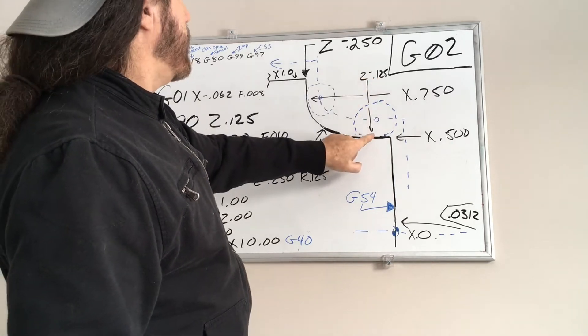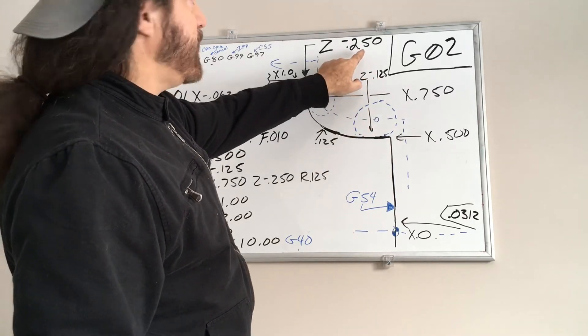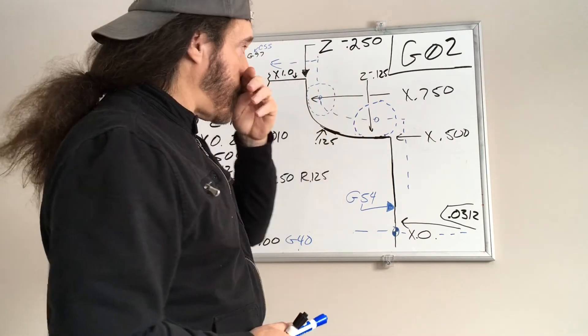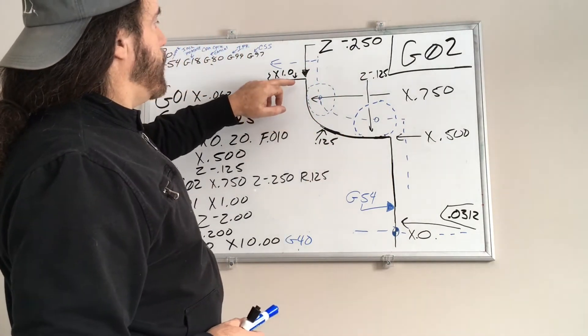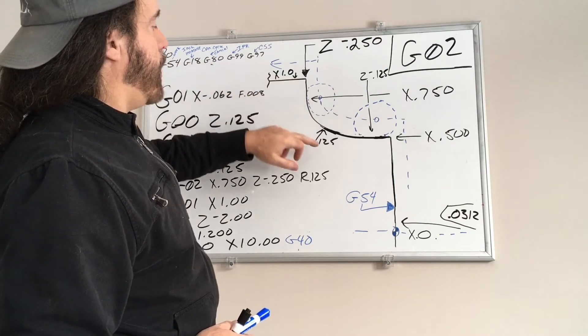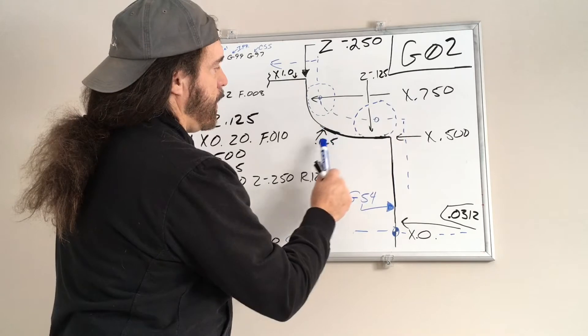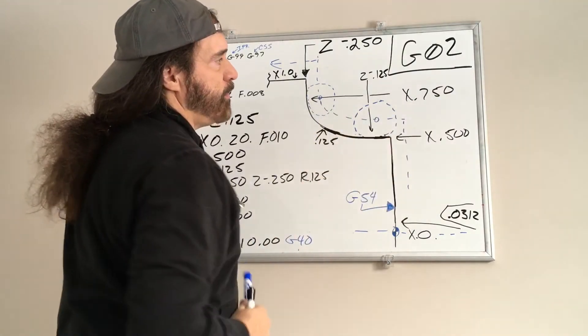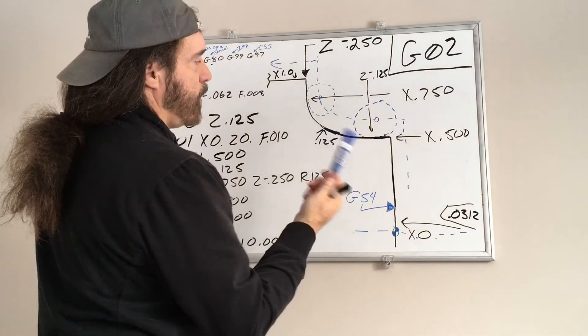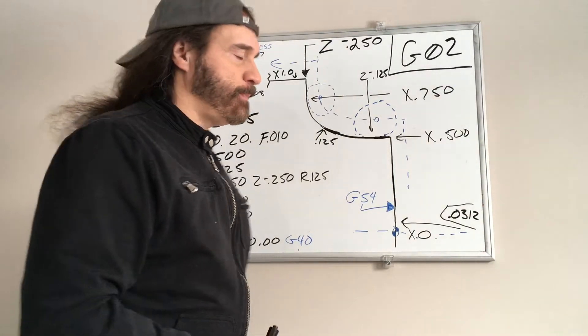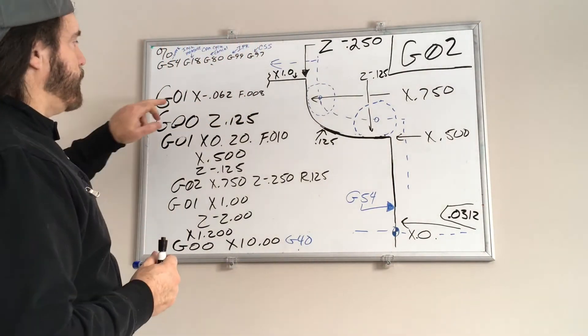So we're going to come up to X point five, we want to come in to Z negative one two five, we want to end up here at Z negative two fifty. So that's a point one two five radius, and we're going to end up at one point zero, but it's going to finish the cut at X point seven fifty.